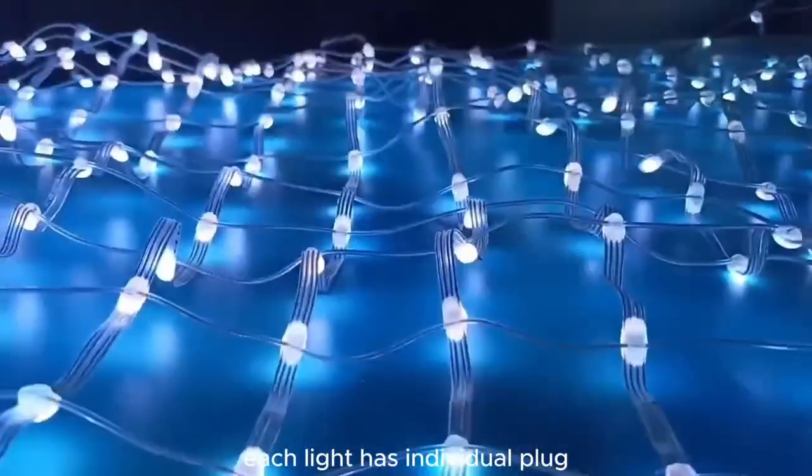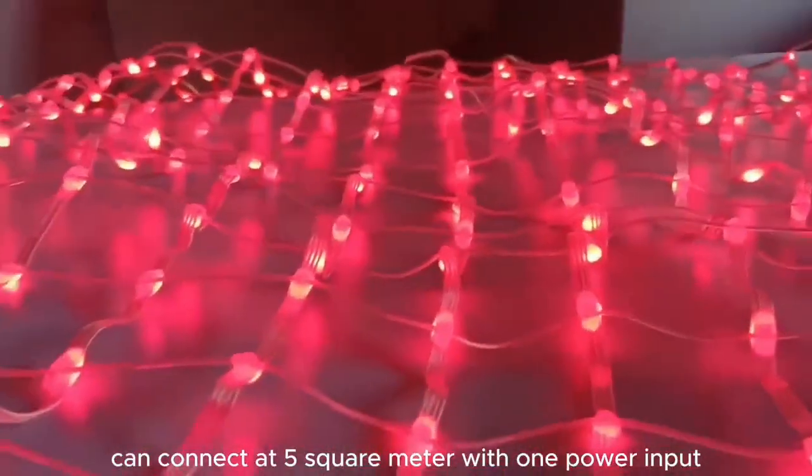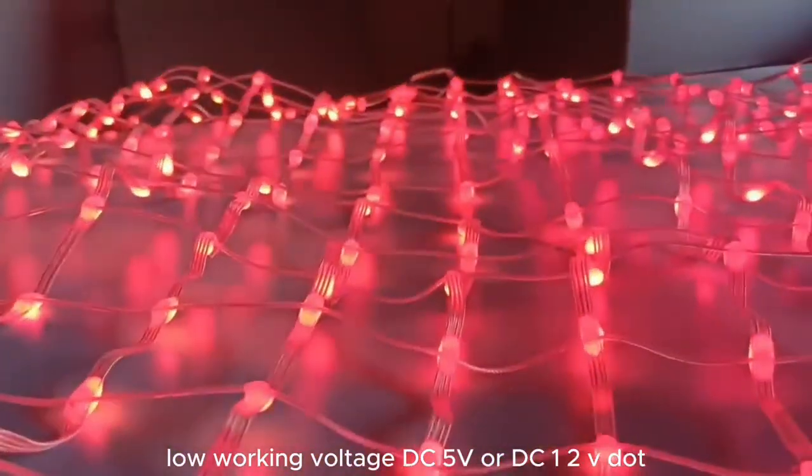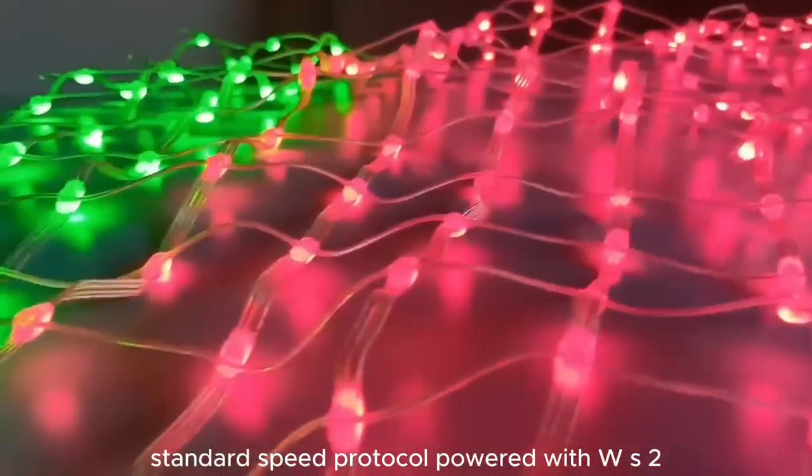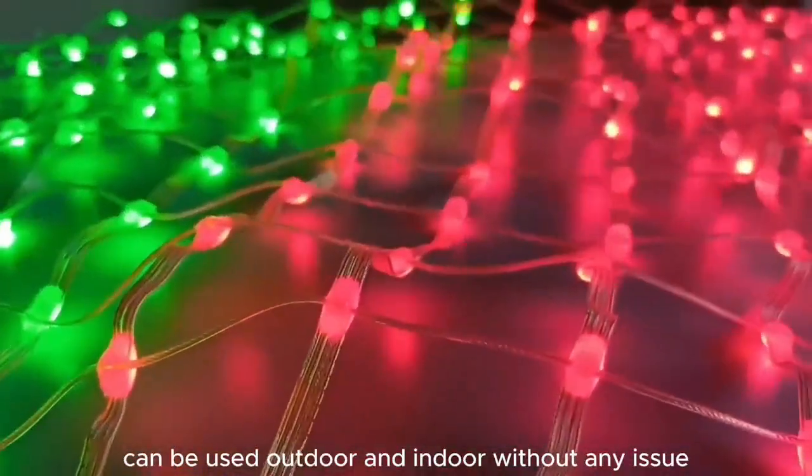Each light has individual plug. The advantage of this product is it can connect at 5 square meter with one power input without voltage drop. Low working voltage DC5V or DC12V, standard SPI protocol powered with WS2811ic chipset, can be used outdoor and indoor without any issue.